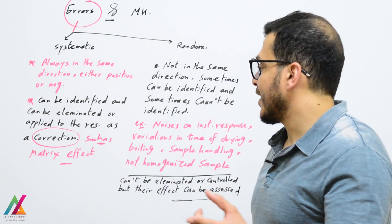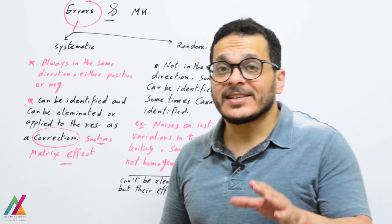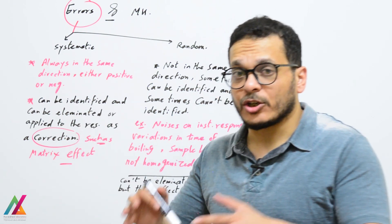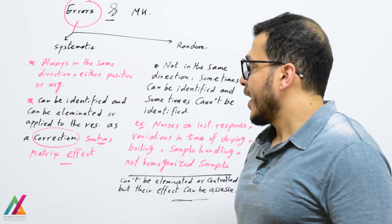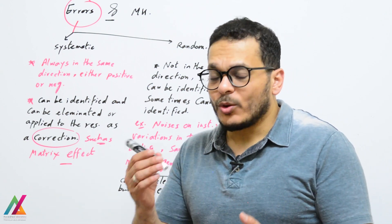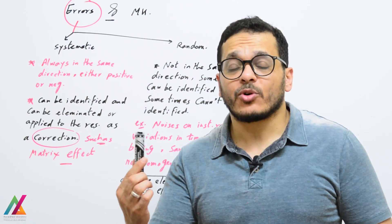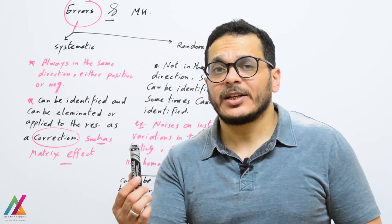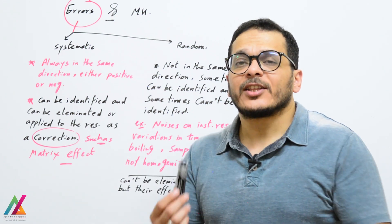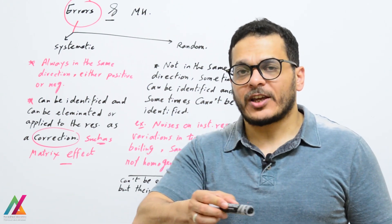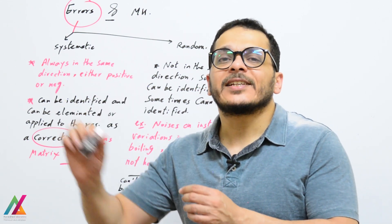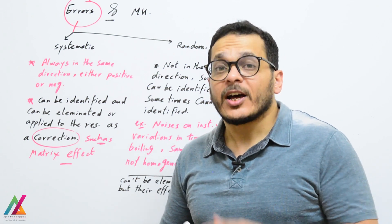If you cannot eliminate systematic errors, you apply a correction to the result. As explained before regarding matrix effect, if you cannot eliminate that error, you find a correction factor. You prepare a sample to study the effect of the matrix on the target analyte, and you obtain a correction factor. This correction factor is then multiplied to all results to get the real concentration of the analyte in the matrix.